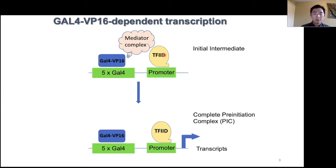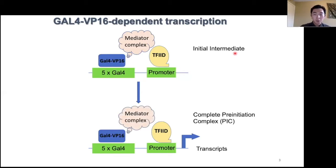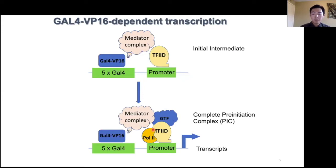So activator, mediator, and TF2D could form a stable initiation intermediate functioning as a landing pad for the other general transcription factors and RNA polymerase II, leading the transcription machinery to start making transcripts. However, we all know that GAL4-VP16 is a synthetic activator, and we would like to test this stable initiation intermediate hypothesis in an authentic model.